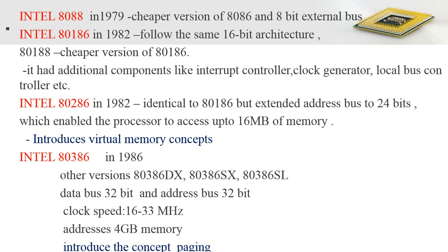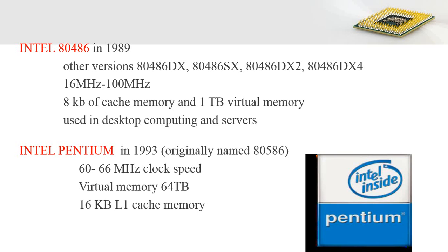In 1989, Intel introduced the 80486, with versions including the DX, SX, DX2, and DX4. The clock speed ranged from 16 MHz to about 100 MHz. It could address 8 KB of cache memory and 1 TB of virtual memory, and was used for desktop computing and servers.